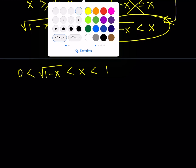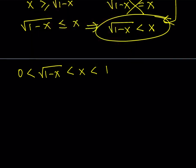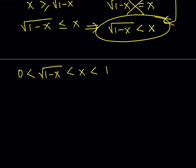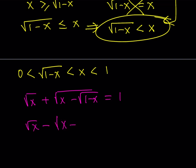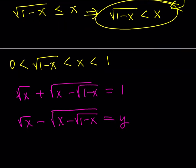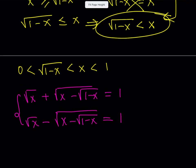My original problem is: the square root of x plus the square root of (x minus the square root of 1 minus x) is equal to 1. What I'd like to do is pair this with its conjugate, which looks like: the square root of x minus the square root of (x minus the square root of 1 minus x). Since I don't know what this equals, I'll set it equal to y. I would like to multiply these two conjugates together because multiplying two conjugates gives something nice.